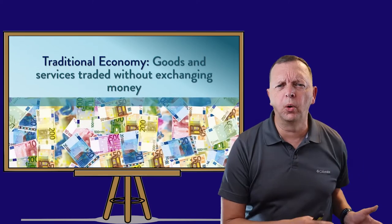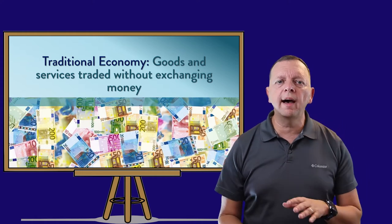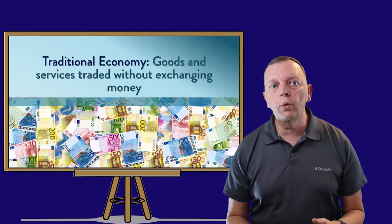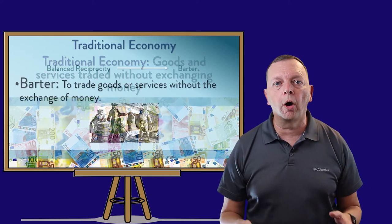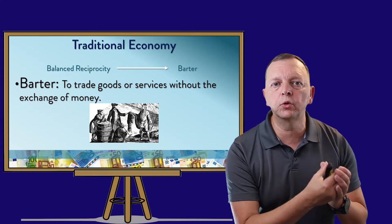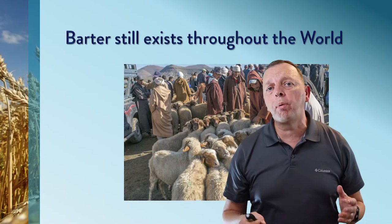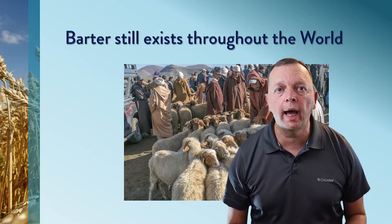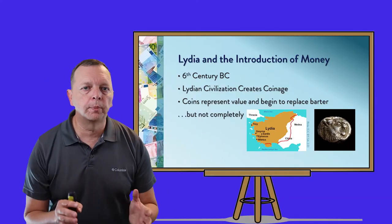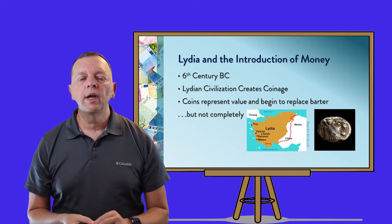Now, a traditional economy is the oldest — it is the basic. This is a matter of when we have goods or services traded without the exchanging of money. In other words, this is to barter — essentially when you have an item and you decide to trade it for another item. Barter still exists throughout the world today. However, in the 6th century, the Lydians — people who lived in what is now Western Turkey — created the first coins.